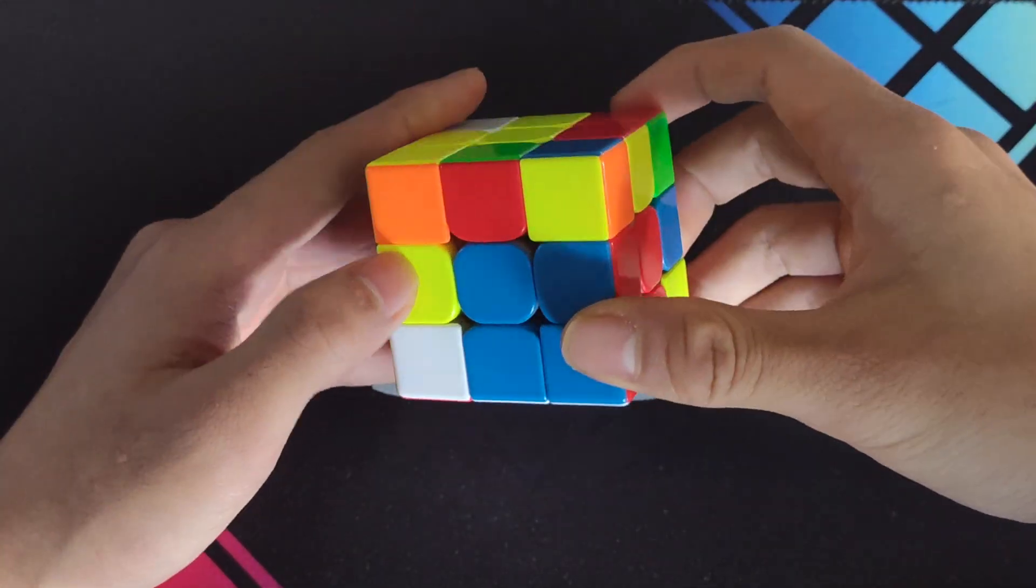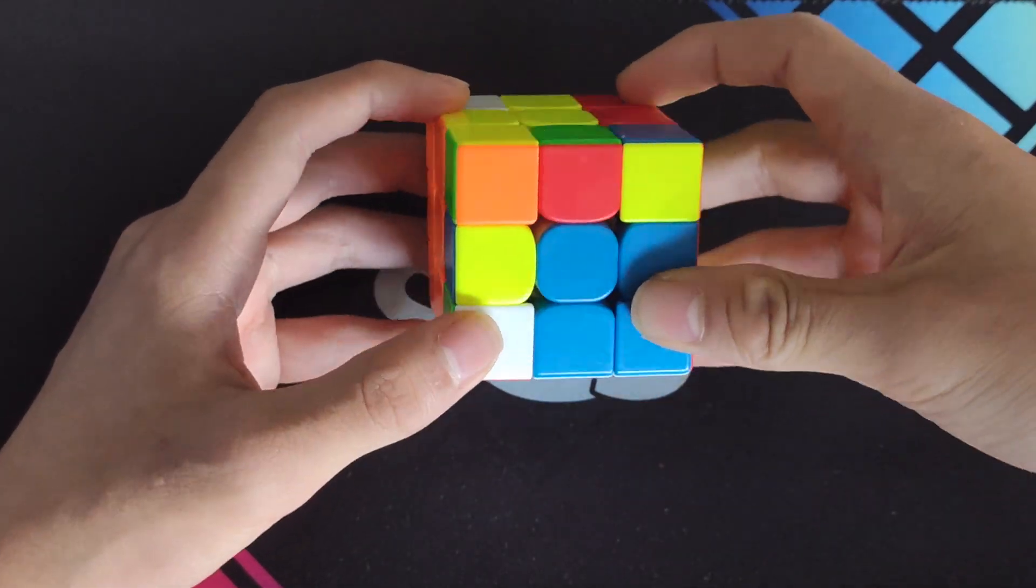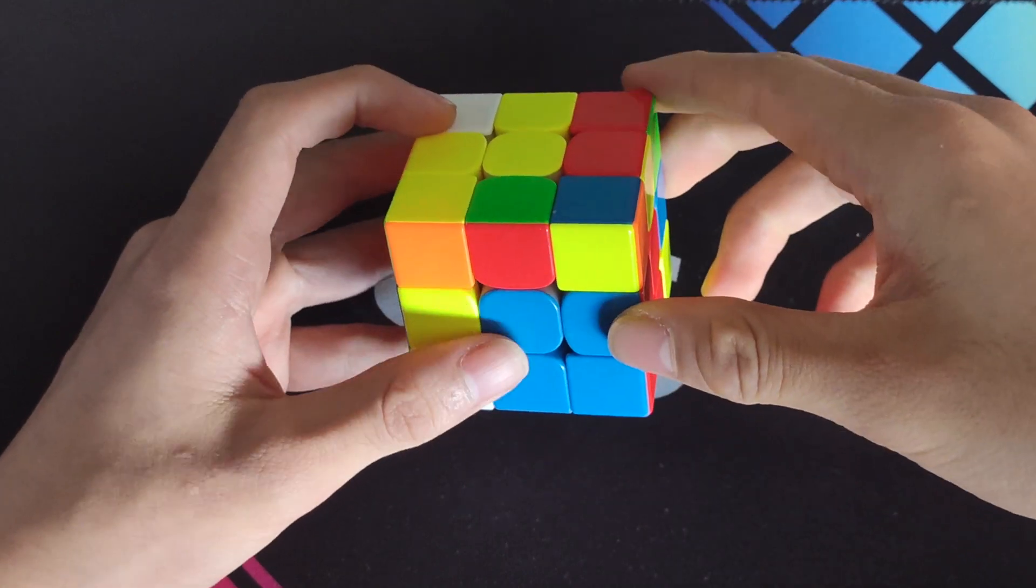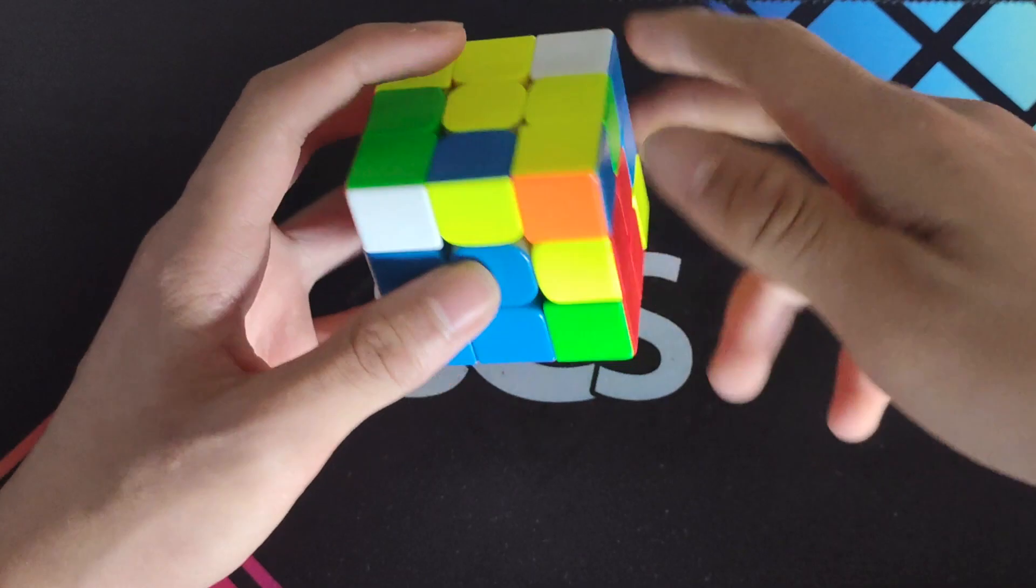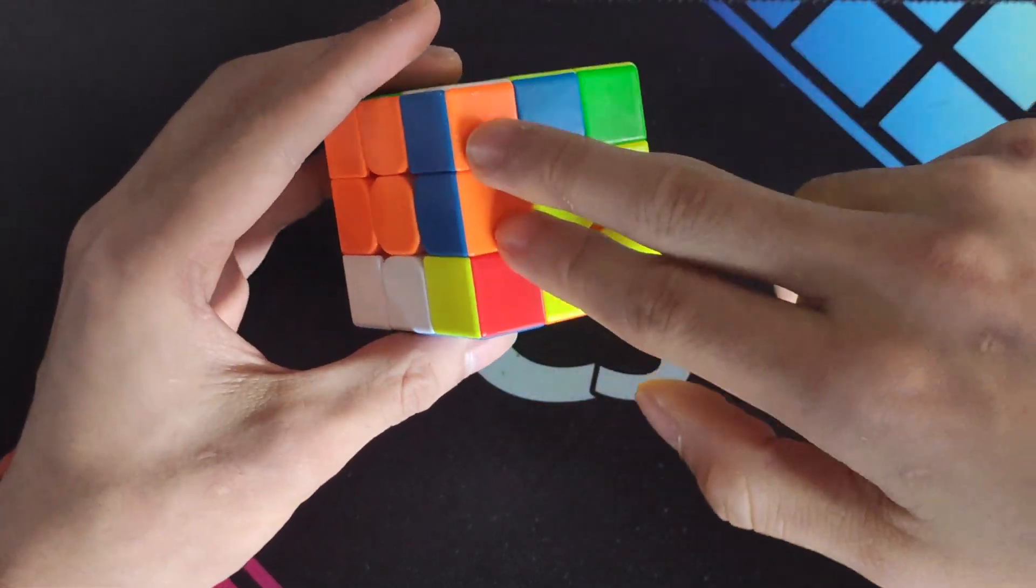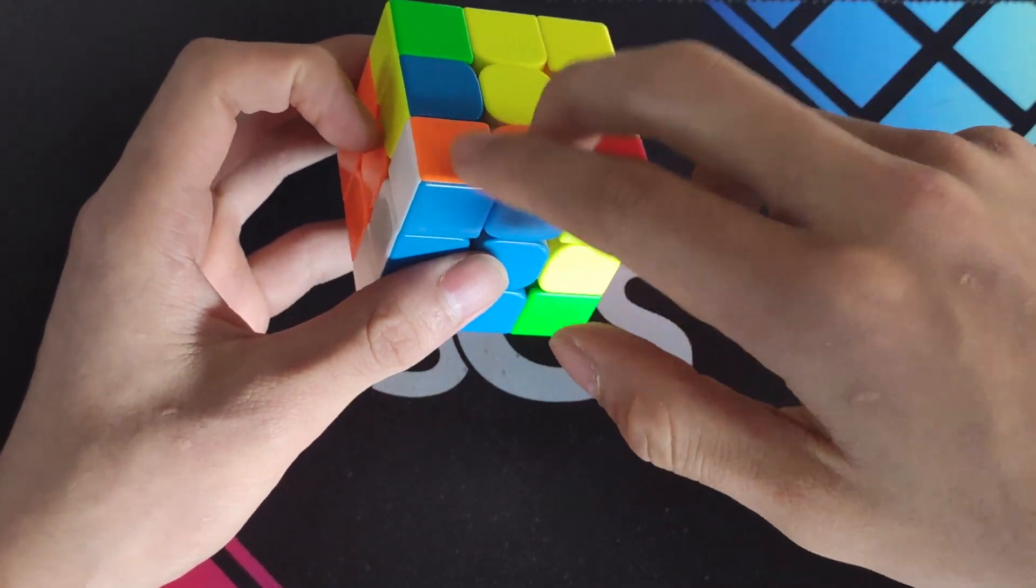and then F'. In this case here, I have the corner in the front-left slot, and then the edge here, misoriented, so I can do a U', F to pair it up, insert it into the back, and then conveniently I have this pair pre-made, so I can just put it here,